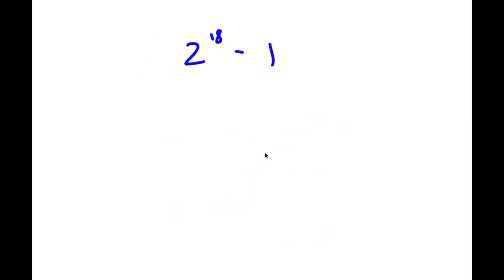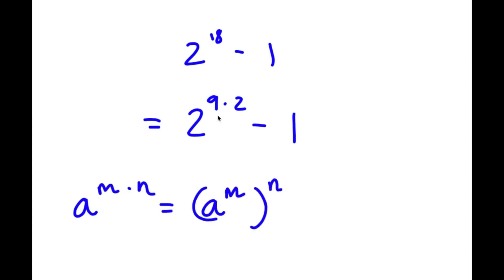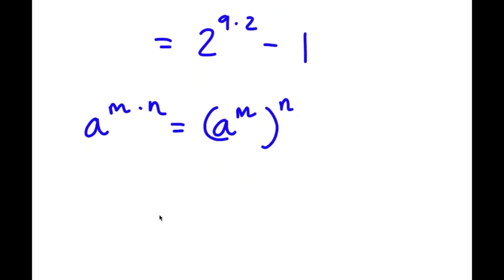In this problem, I have 2 to the power of 18 minus 1. Since 18 equals 9 times 2, I have 2 to the power of 9 times 2, minus 1. Using the property a to the power of m times n equals a to the power of m to the power of n, this becomes 2 to the power of 9, squared, minus 1.